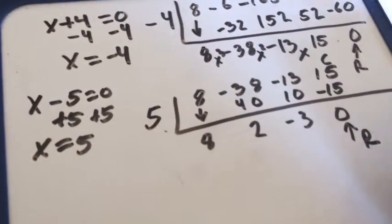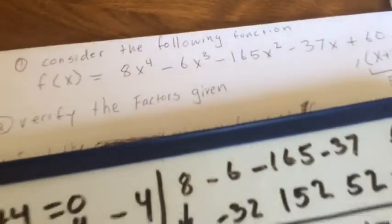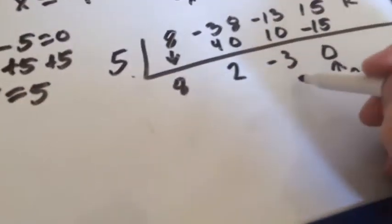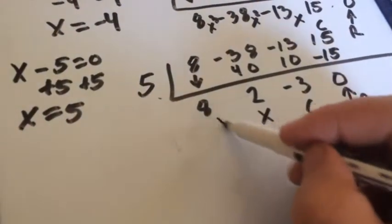Remainder, again, is 0. You've confirmed that that negative 5 is also a factor of the function. Here is your new constant, here is your x term, and here is your x squared term.